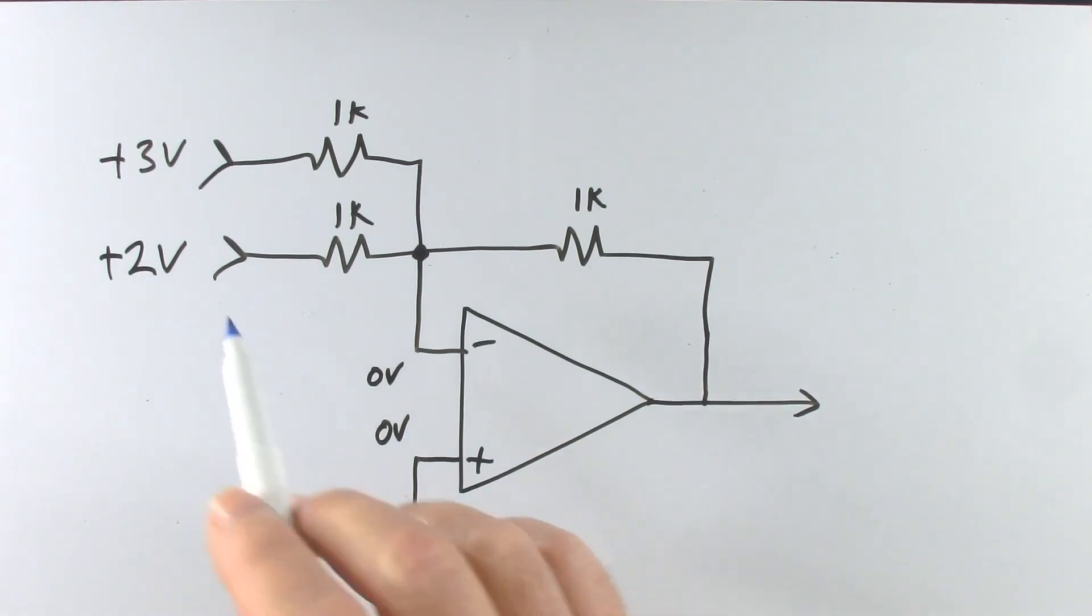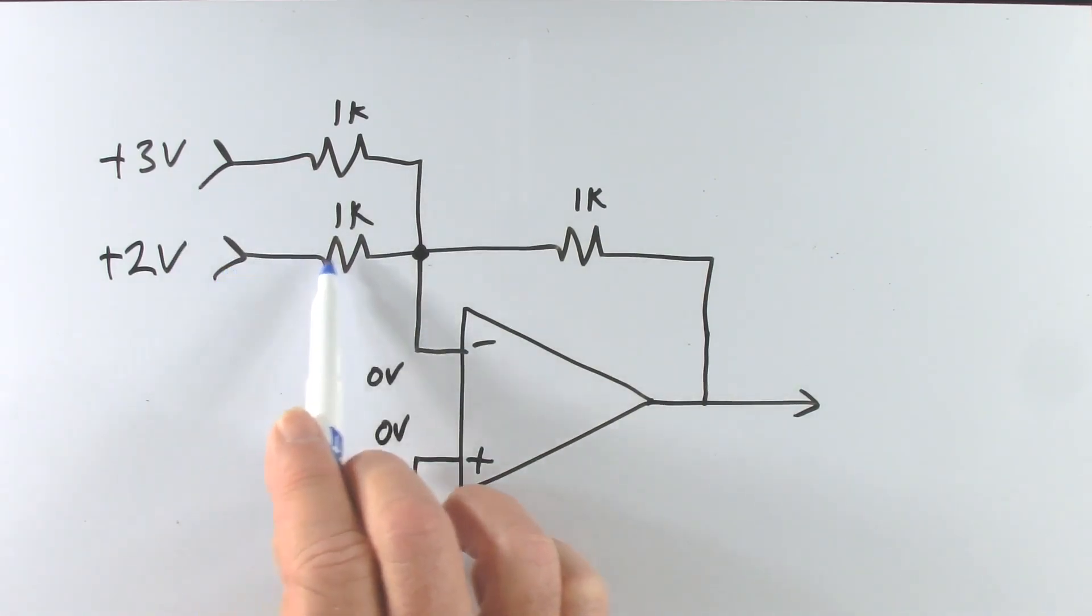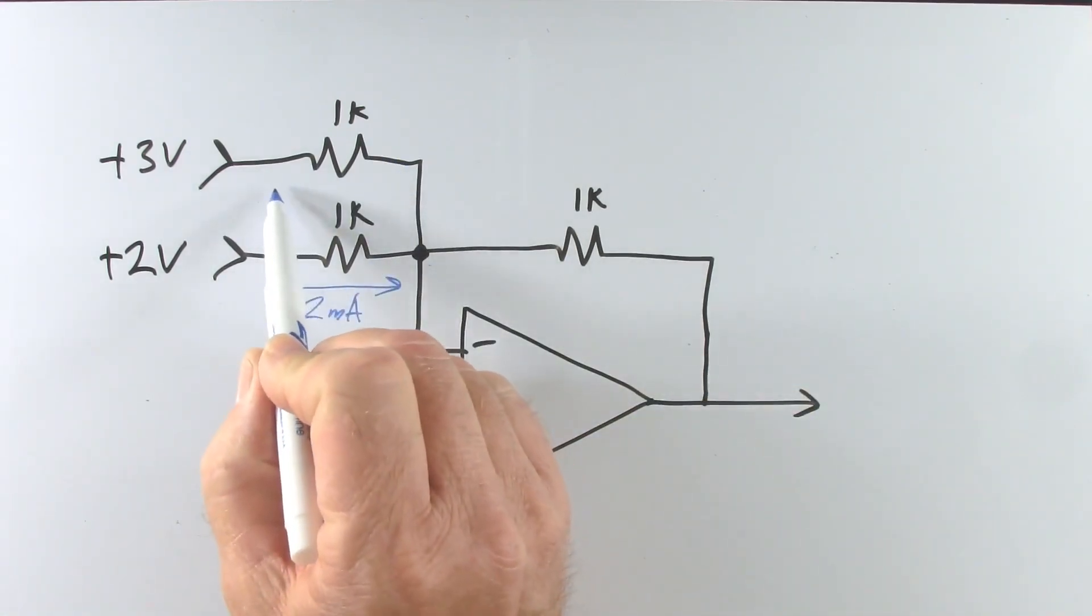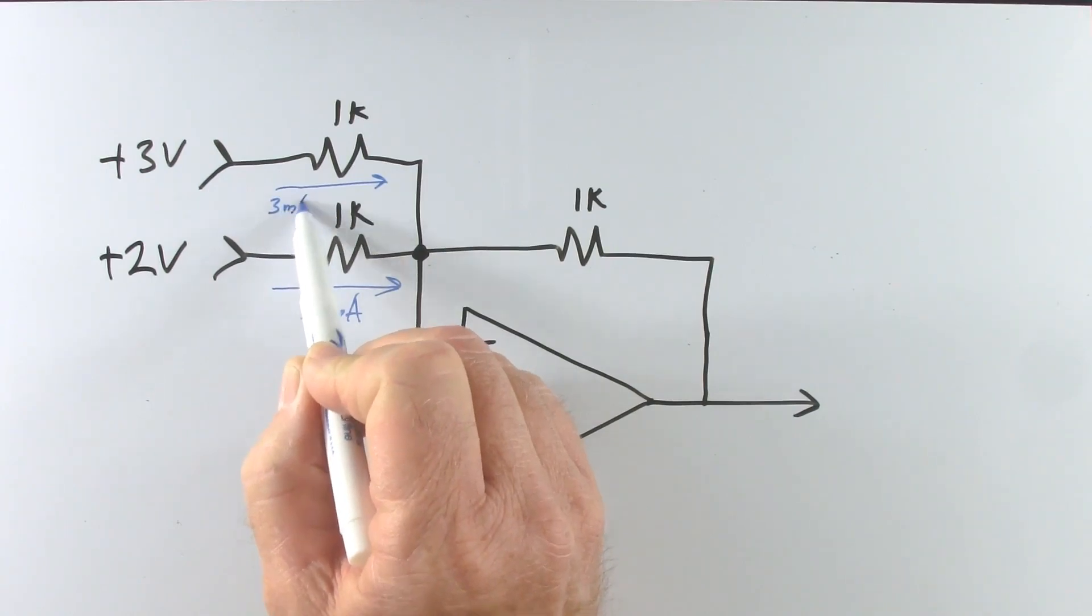To understand the summing amplifier we have to examine the currents flowing through the different resistors. We have 0 volts here, 2 volts here, 3 volts there. So we have 2 volts across 1 kilo ohm. That is going to give us a current of 2 milliamps flowing into that resistor. Here we have 3 volts and 1k, therefore we will have 3 milliamps flowing through that resistor.